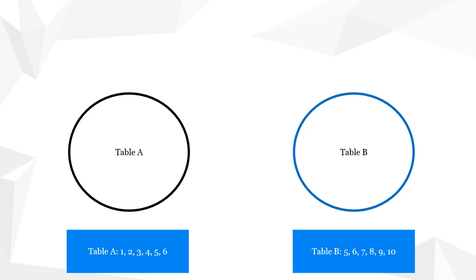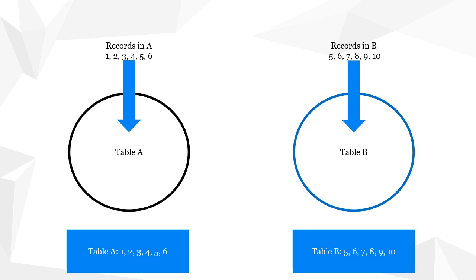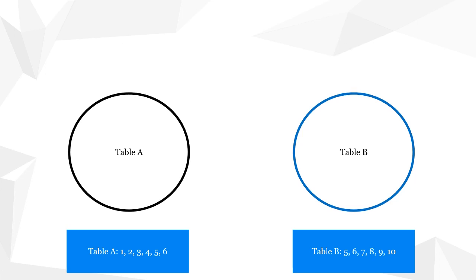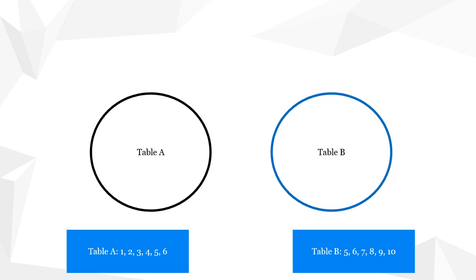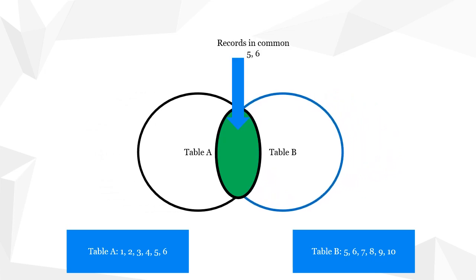Now let's start with the basics behind SQL joins. Let's suppose that we have two tables — table A and table B. You can think of these tables as a group of numbers. Let's suppose that in table A we have the numbers 1, 2, 3, 4, 5, 6, and in table B we have 5, 6, 7, 8, 9 and 10. Let's suppose that we want to get the records that are in common to these two groups — records that are in one group but also in the other group. It will look like this.